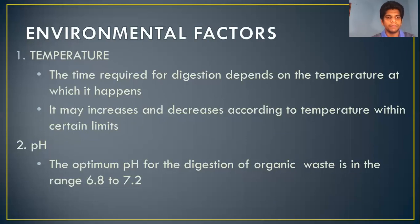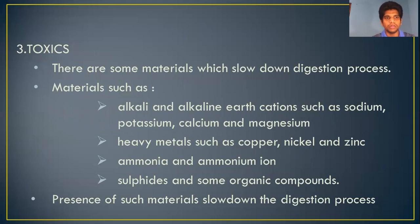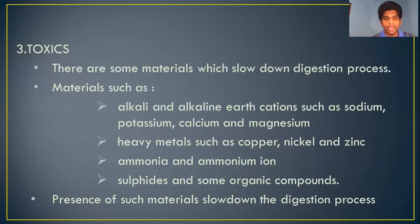The second environmental factor is pH. pH is a measure of the concentration of hydrogen atoms. The optimum pH for digestion of organic waste is in the range 6.8 to 7.2. Last but not least, toxics — there are some materials which slow down the digestion process. These include alkali and alkaline earth cations such as sodium, potassium, calcium, and magnesium; heavy metals such as copper, nickel, and zinc; ammonia and ammonium ions; and sulphides and some organic compounds.